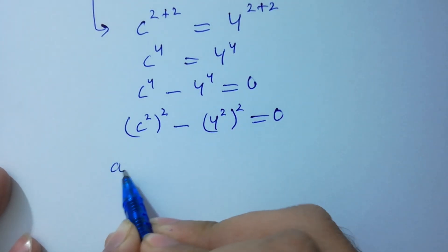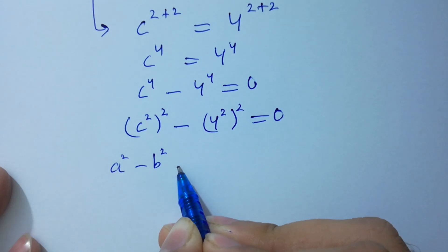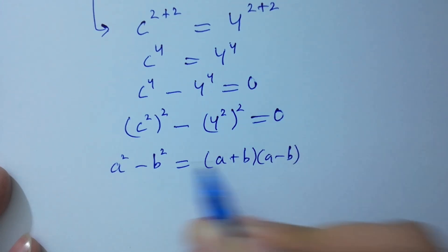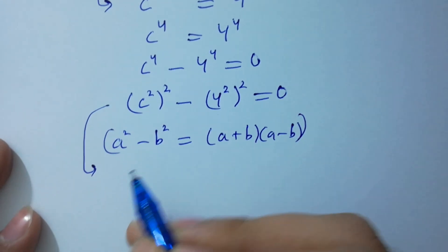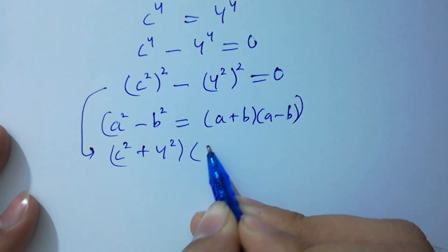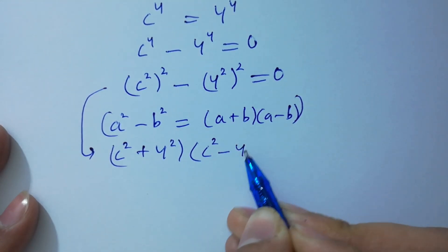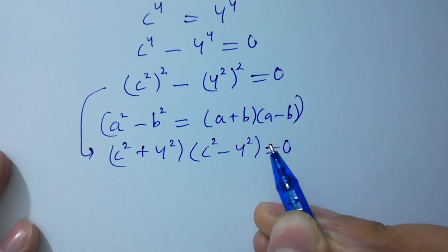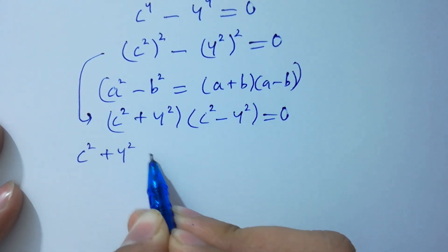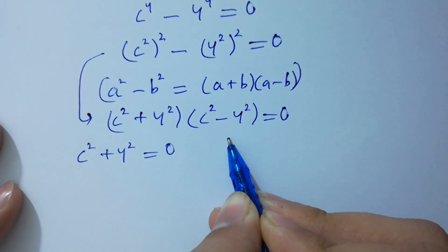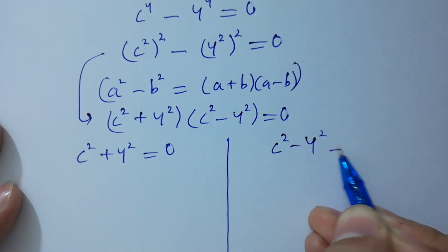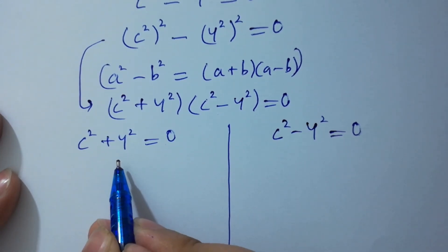Since a squared minus b squared equals (a plus b)(a minus b), applying this we get (c squared plus 4 squared)(c squared minus 4 squared) equals 0. So c squared minus 4 squared equals 0 and c squared plus 4 squared equals 0.